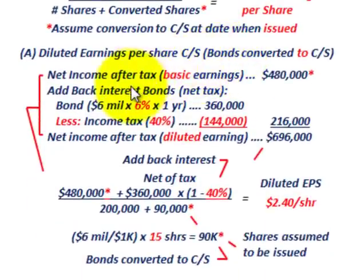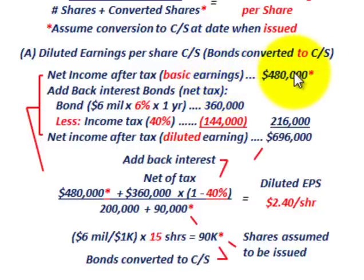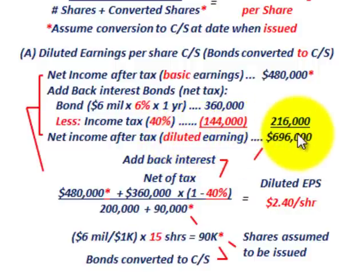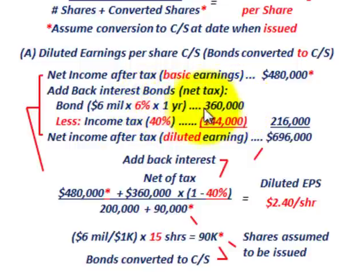For our calculations, we start with net income after tax of $480,000 — our basic earnings. Now we add back the interest on the bonds net of tax. We had $6 million of bonds paying 6% interest outstanding for the entire year, which equals $360,000 of interest expense. Subtract income tax at 40%, which is $144,000. So bond interest expense net of tax equals $216,000.